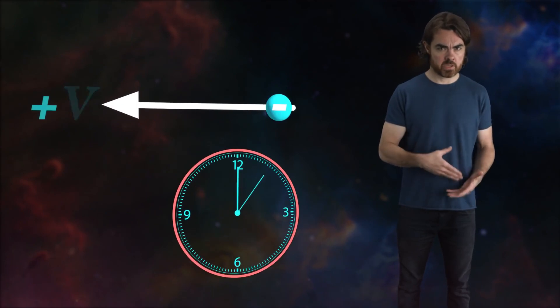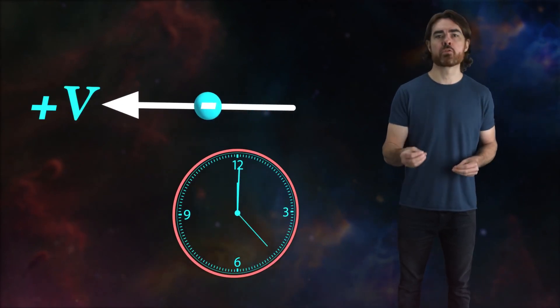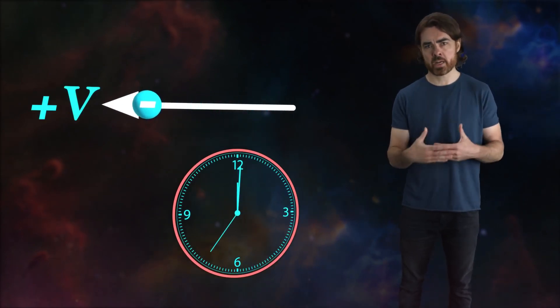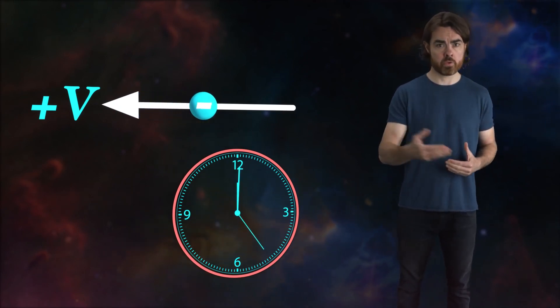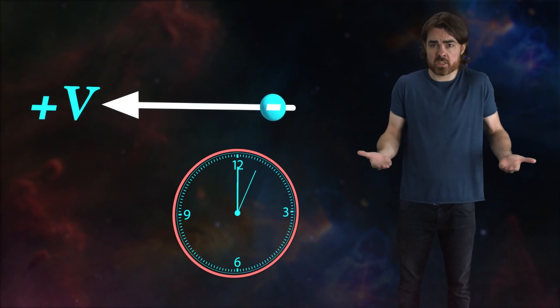But reversing a particle's motion is mathematically the same as watching it in reversed time. That doesn't mean that time actually goes backwards, just that if you reverse the ticking of the clock in the particle's coordinate frame, its direction of motion appears reversed, which has the same effect as flipping its charge.